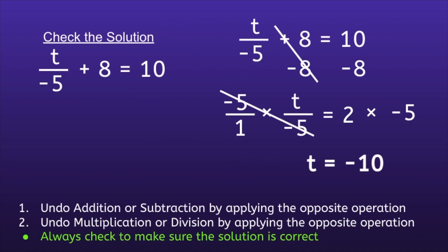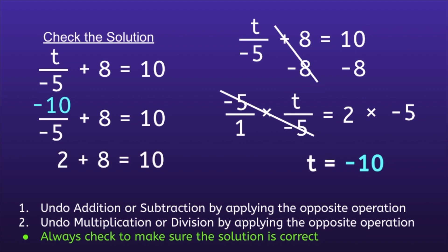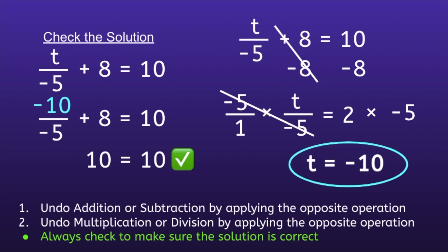But we're not done yet, because we have to check. So we write the original equation and replace the t with our answer, which was negative 10. Negative 10 divided by negative 5 is equal to 2, and 2 plus 8 is equal to 10. Since both sides are equal, we know we are correct. The answer is t is equal to negative 10.